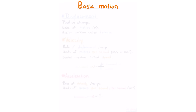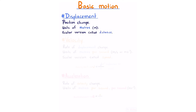Basic motion. Displacement is position change, measured in units of meters. The scalar version without direction is called distance. If I go from A to B and back, with a distance of 20 meters between them, I travel 40 meters total. However, knowing direction, we recognize my position hasn't changed, so my displacement is zero.